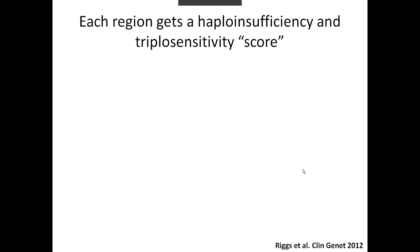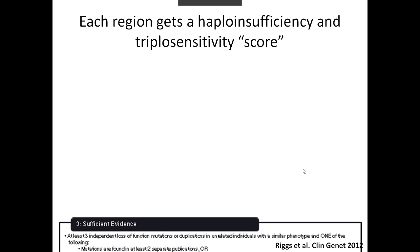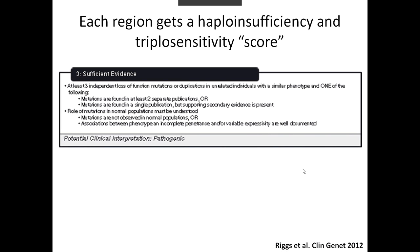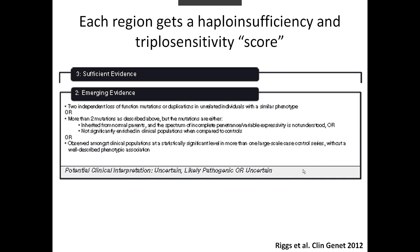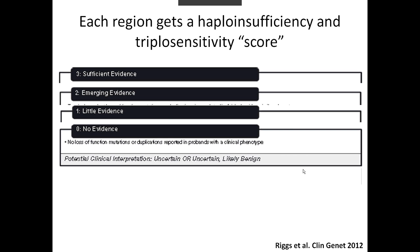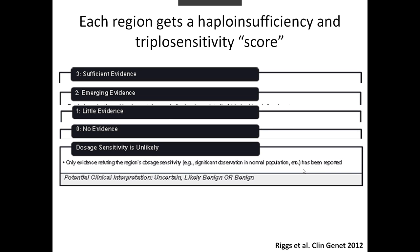Evidence for haploinsufficiency and triplosensitivity are considered separately for each gene and genomic region, and each one is given both a haploinsufficiency and a triplosensitivity score meant to signify the strength of the available evidence for each. Our highest score is 3, and genes and regions assigned a score of 3 are considered to have sufficient evidence for haploinsufficiency and/or triplosensitivity. Copy number variants involving these regions could be considered pathogenic in a clinical setting. Decreasing scores signify decreasing evidence. A score of 0 means that there is no evidence, while a score of dosage sensitivity unlikely indicates that there is evidence contradicting the role of dosage sensitivity in disease. The criteria for all the scores is published in the reference below.